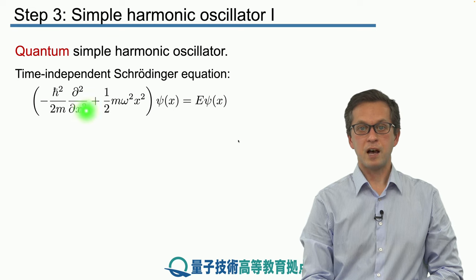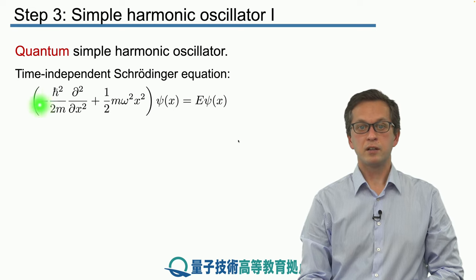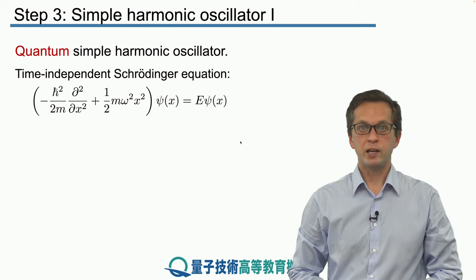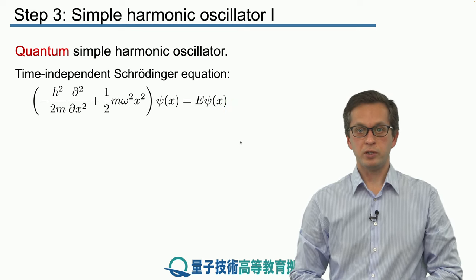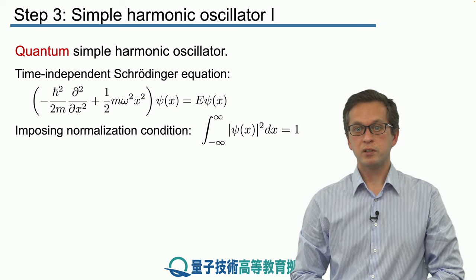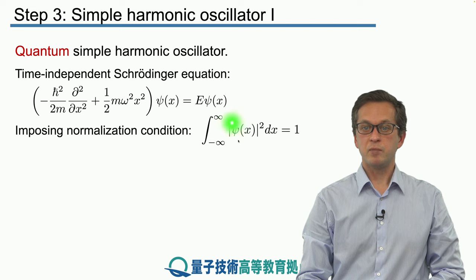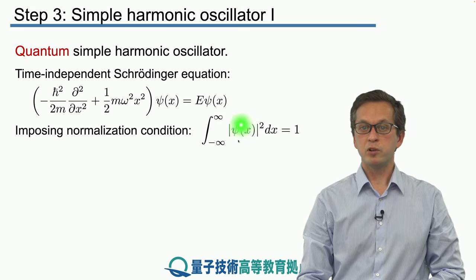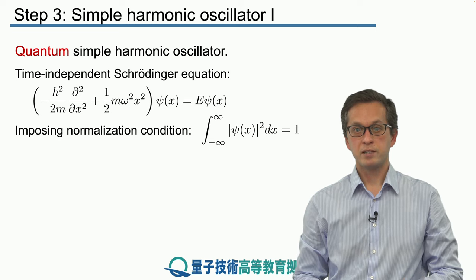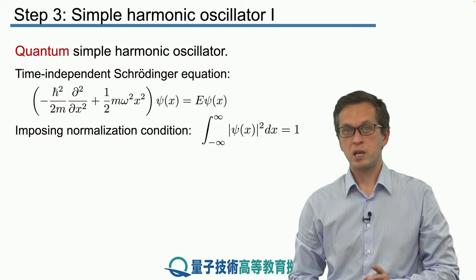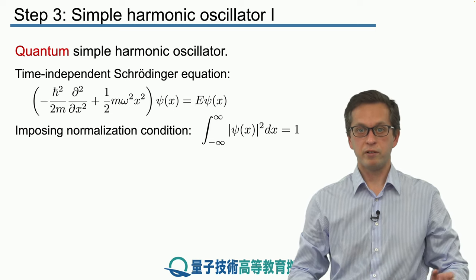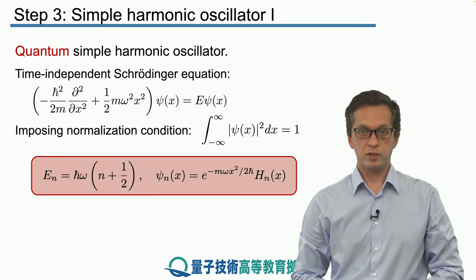This is our rewritten eigenvalue problem. It's not too complicated to solve, but we're not going to do it here, we're just going to state the results. Imposing the normalization condition—demanding that the modulus of psi x squared integrated over all space equals 1, which says that the particle must be found somewhere in space—we obtain the following solutions.